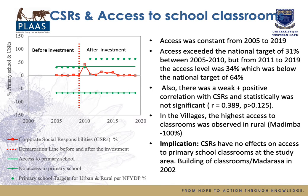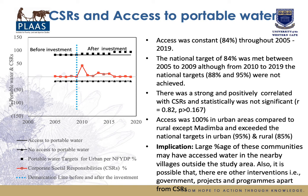On access to school classrooms: access was constant throughout the study period and was low before investment. Access actually exceeded the national target before investment, but dropped after investment. It was weak and positively correlated with CSRs but not statistically significant. The highest access was observed in rural areas, in only one village. This implies CSRs had no effect on access to primary school classrooms in the study area, though the 2002 classroom construction campaign may have contributed to the observed results.